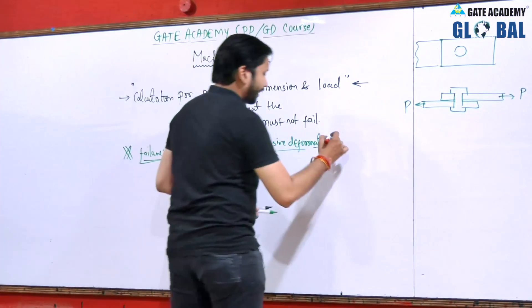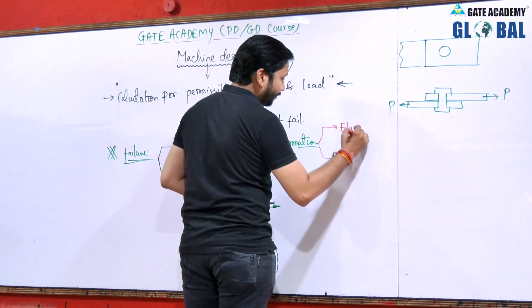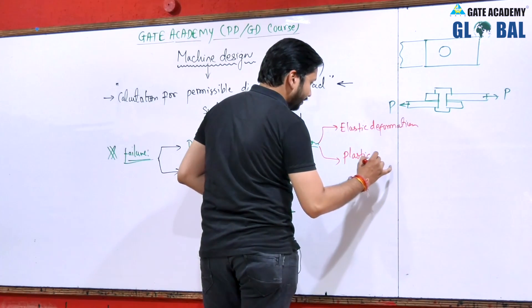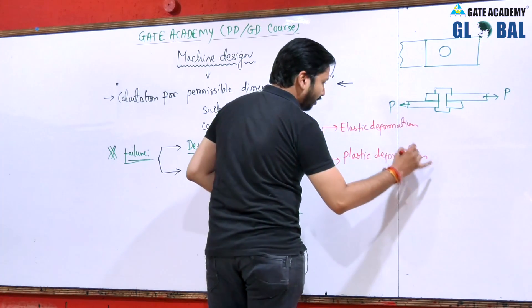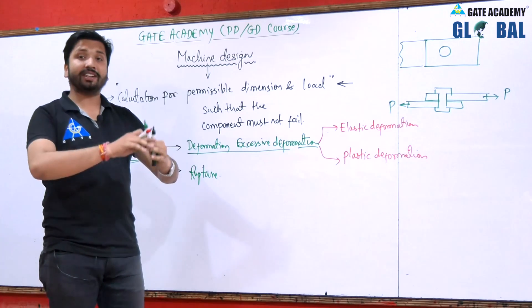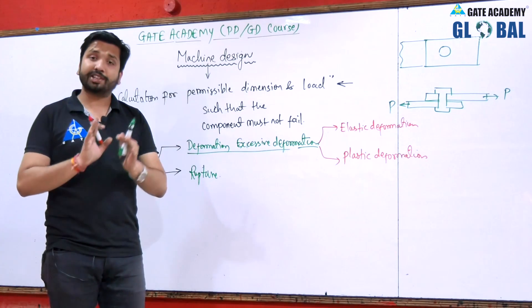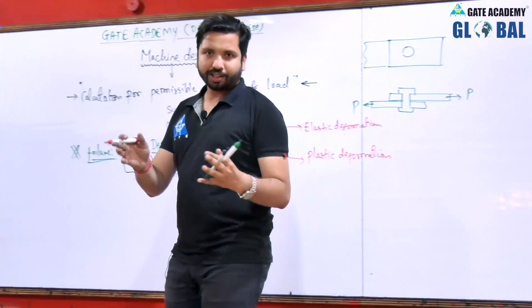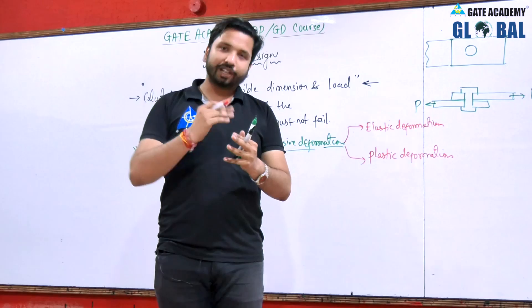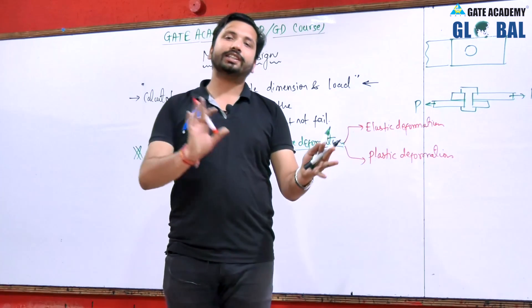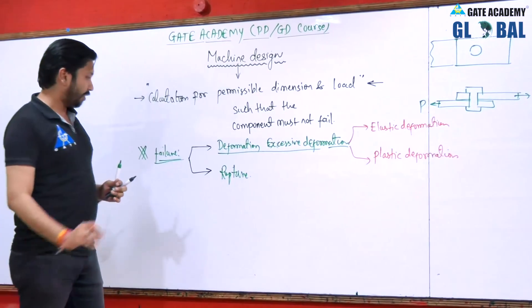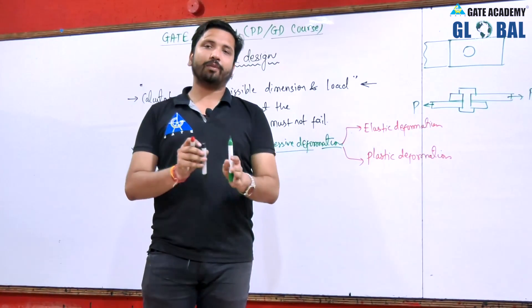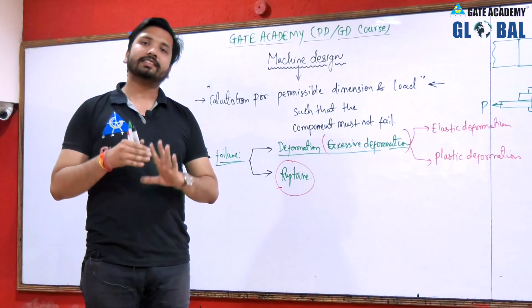So you can clearly see that failure means if the component is not able to satisfy your needs — whatever you want from that particular component — it is said to have failed. The deformation or excessive deformation can be categorized in two ways: first is excessive elastic deformation, and second is excessive plastic deformation. Although plastic deformation must not occur, in some cases it is unavoidable. But if it is of large extent, you must repair or replace that particular component. In plastic deformation, when you apply a load, the component deforms and will not regain its original shape and size. Rupture means permanent breakage — the component will break apart and the only option you have is to replace the component.